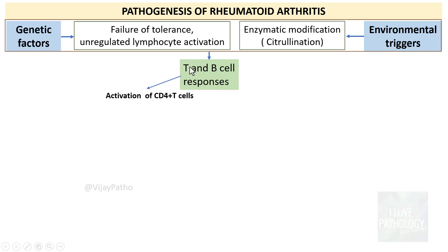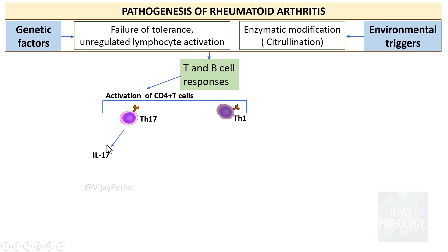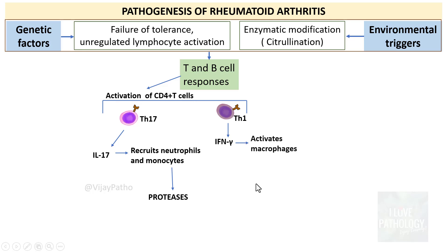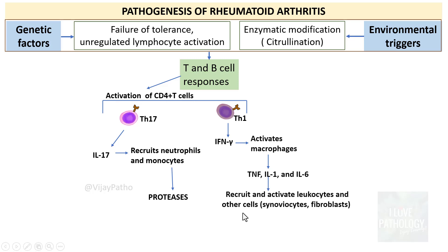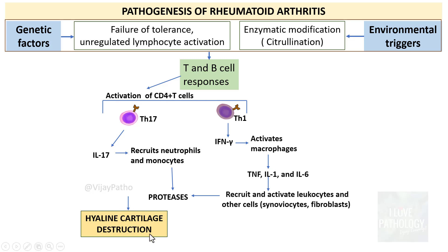For T cell responses: CD4-positive T cells are activated, specifically T helper 17 and T helper 1 cells. T helper 17 synthesizes interleukin-17, which recruits neutrophils and monocytes that secrete proteases. T helper 1 cells secrete interferon-gamma, which activates macrophages. These macrophages release tumor necrosis factor, interleukin-1, and interleukin-6, which further recruit and activate leukocytes, synoviocytes, and fibroblasts. The activated leukocytes release proteases that destroy the hyaline cartilage.